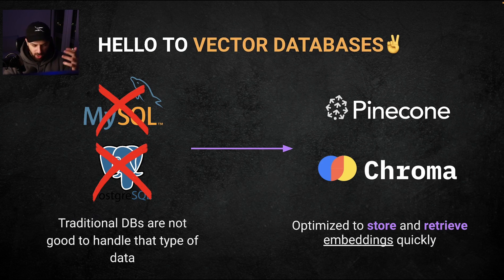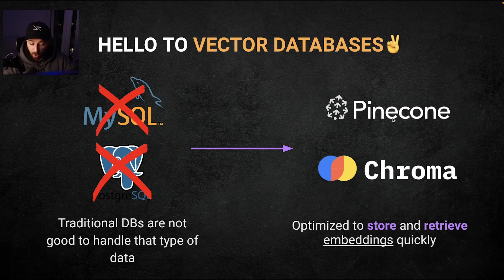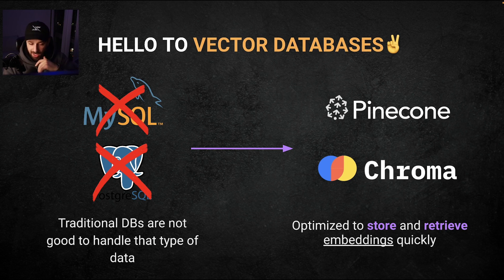The problem with regular databases like MySQL or PostgreSQL is that they are not good at handling that type of data. That's why people have invented very efficient databases that handle specifically embeddings. There are companies like Pinecone or Chroma that you might have heard of — they specialize in storing embeddings and retrieving them in an efficient and quick way.